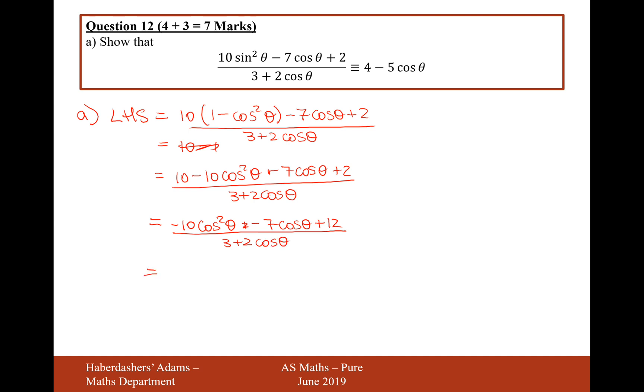Now let's factorise. So it's probably going to be 3 plus 2 cos theta in one bracket. So if we work out what needs to go in the other bracket, it needs to be a 4 to multiply it together to make the 12. And then it's probably going to be a minus 5 cos theta to make the minus 10 cos squared. Let's just check it makes the minus 7. So it's going to be minus 15 add 8 cos theta. So yes, that will all work.